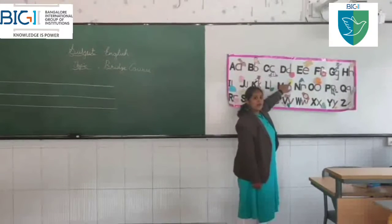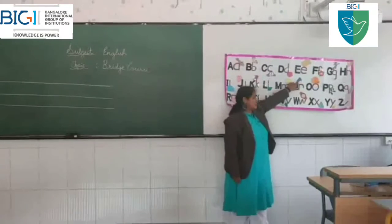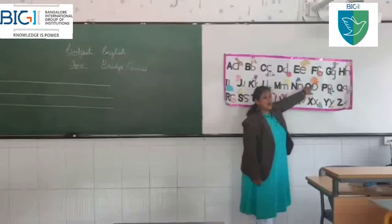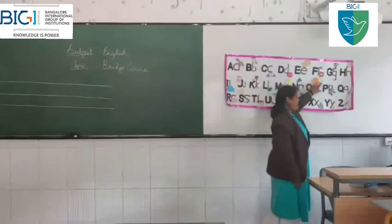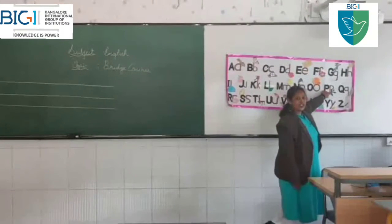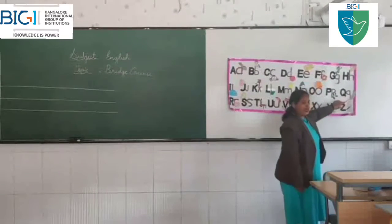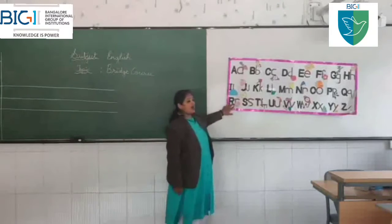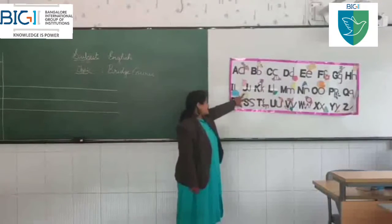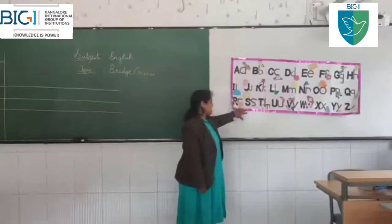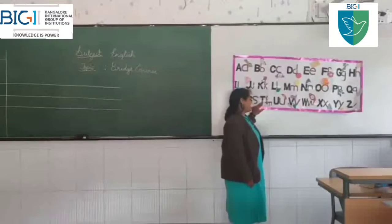M is for mango. N is for net. O is for orange. P is for plant. Q is for quill. R is for rose. S is for sun. T is for table.